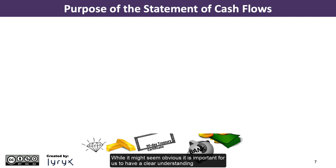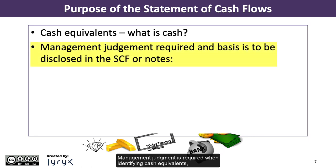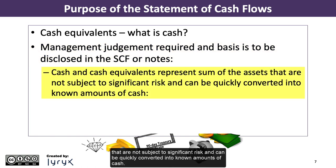It is important for us to have a clear understanding of exactly what cash is when it comes to the cash flow statement. Cash is comprised of not only cash in the traditional sense, but also cash equivalents. Management judgment is required when identifying cash equivalents, and this basis is to be disclosed in the SCF or notes. Generally speaking, cash and cash equivalents represent the sum of assets that are not subject to significant risk and can be quickly converted into known amounts of cash.